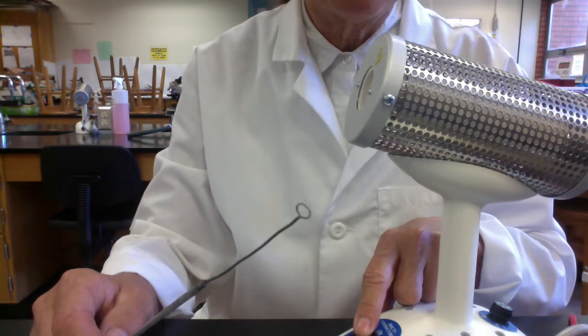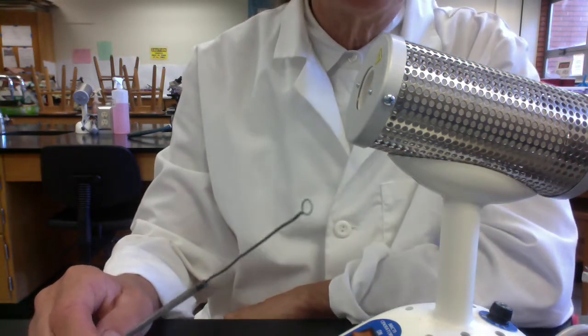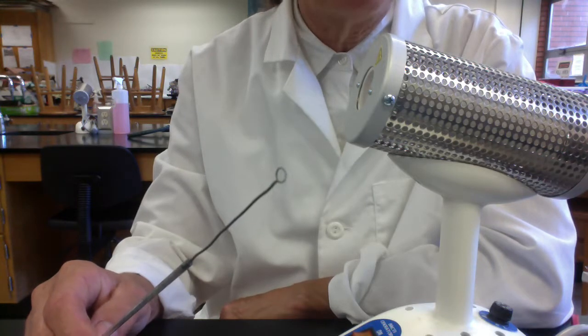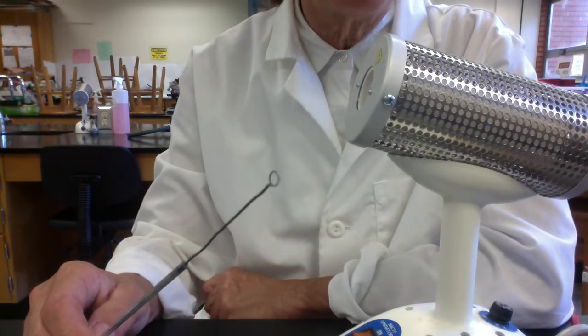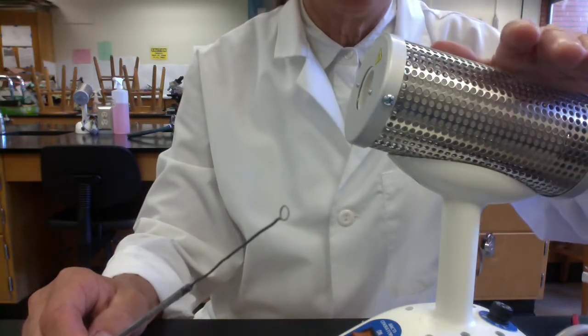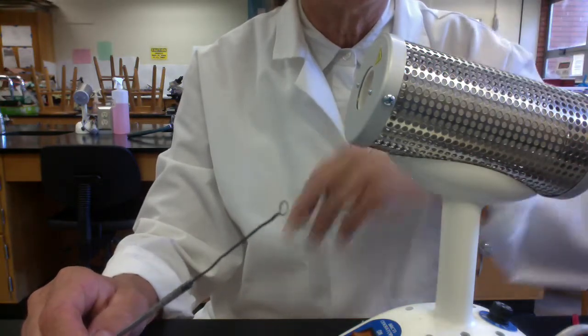And then you're going to turn them on. There's a little lever at the base here. And the recommendation is to let the Bacti incinerator warm up for five to ten minutes. Once it's warmed up, be really careful because the outside of the barrel here will be really hot and can burn you. So be careful that you don't touch that.